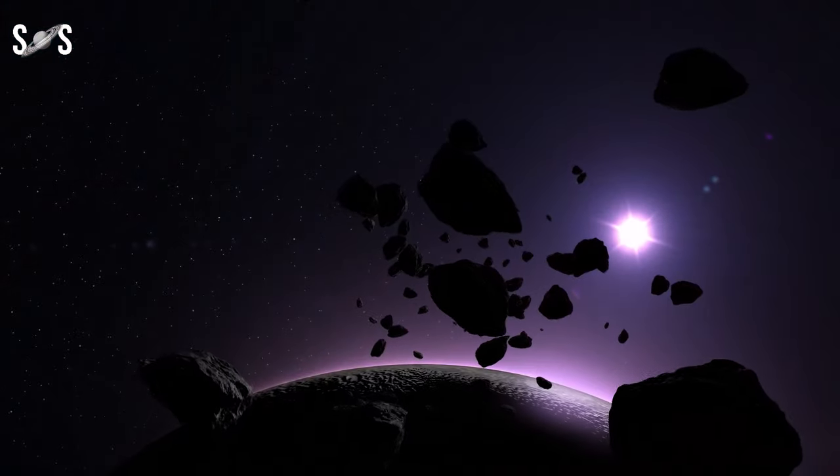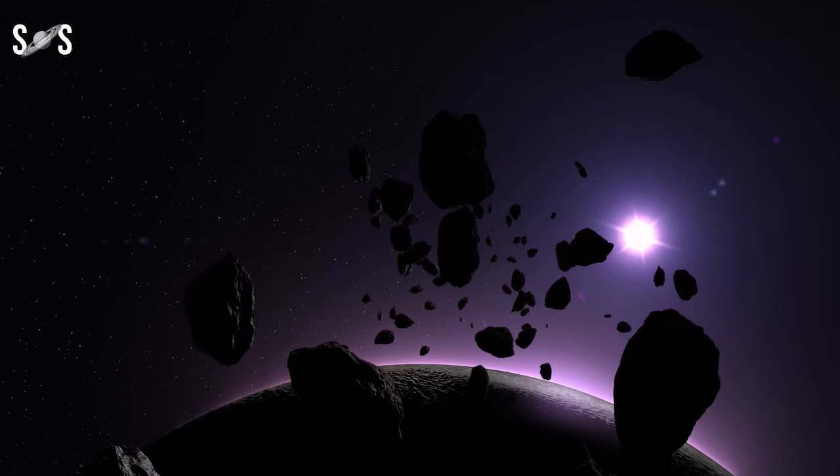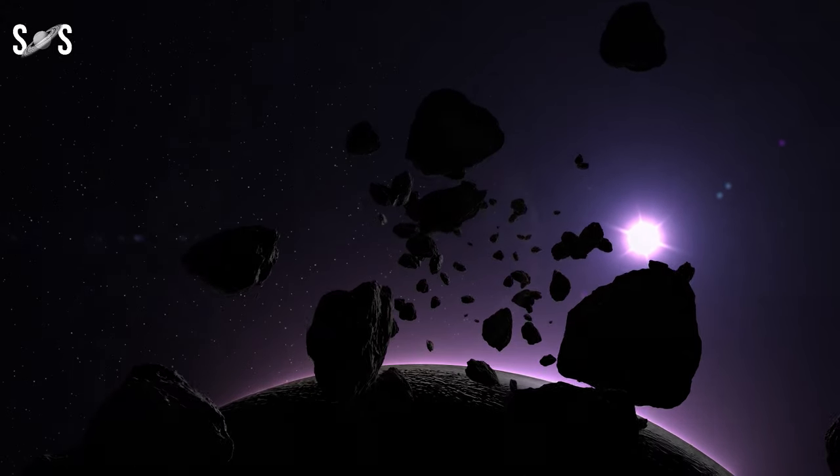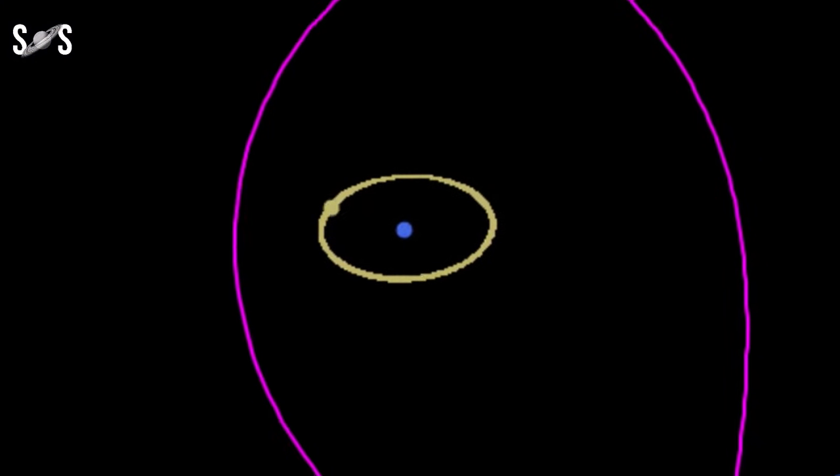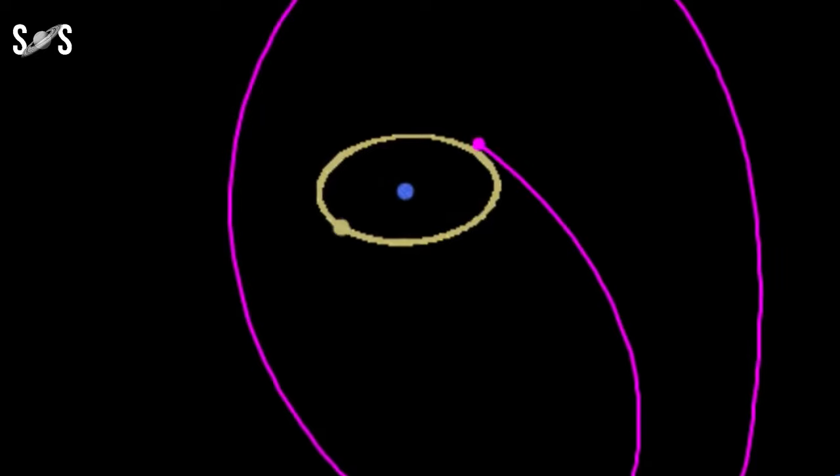The current predictions suggest that it will be captured by Earth's gravity at the end of September 2024, make a single loop around our planet, and then slingshot back into its orbit around the Sun by mid-November 2024.